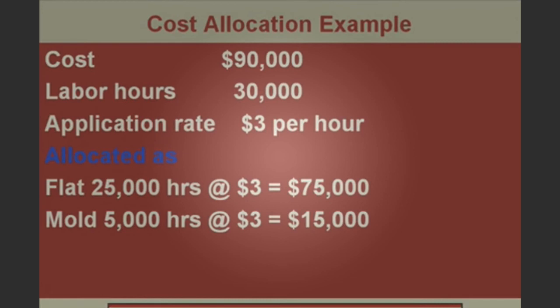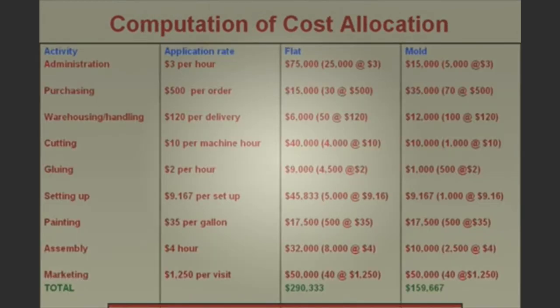Now we allocate the cost. For administration: cost $90,000, 30,000 labor hours — application rate $3 per labor hour. Flat: 25,000 hours × $3 = $75,000. Mold: 5,000 hours × $3 = $15,000. These add up to $90,000, confirming correct allocation. Stop and do this analysis for the other activities. The total overhead allocated: flat $290,333, mold $159,667 — adding to $450,000, the total we needed to allocate. Overhead per unit: flat $290,333 / 50,000 = $5.81; mold $159,667 / 5,000 = $31.93.